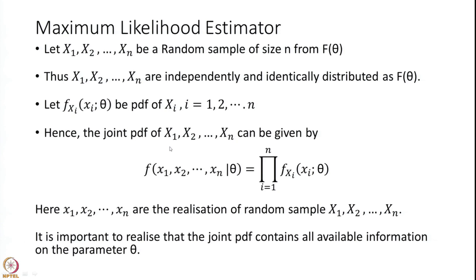Then the joint PDF of all n members of the sample, let us call it f(x1, x2, ..., xn | theta), will be a product of all the PDFs of each member Xi, which are identical except for the value of xi. Please note the difference between capital Xi (the random variables) and small xi (the realizations of respective capital Xi). Small x1, x2, ..., xn are the realizations of the random sample X1, X2, ..., Xn.